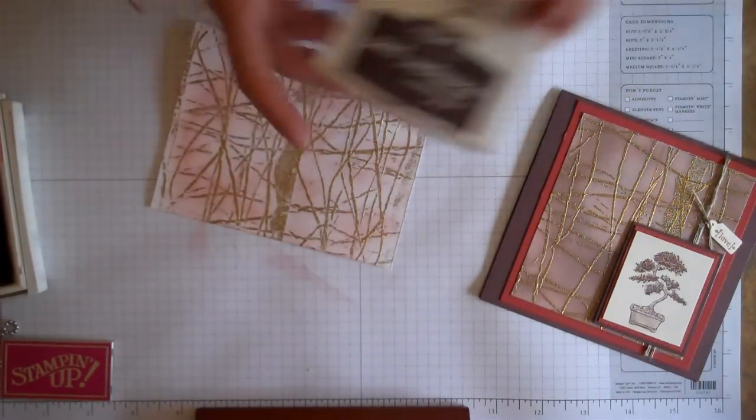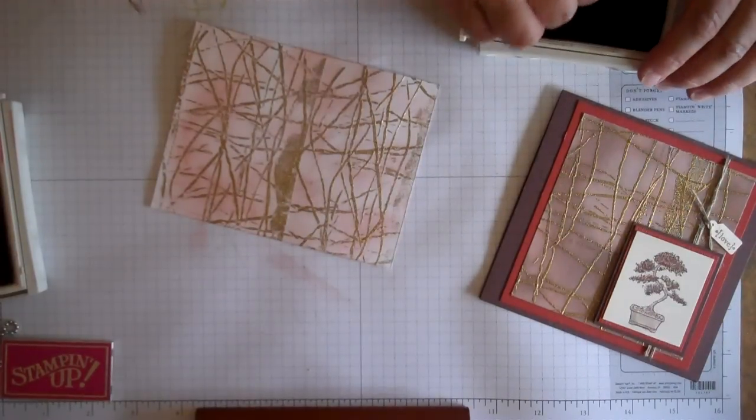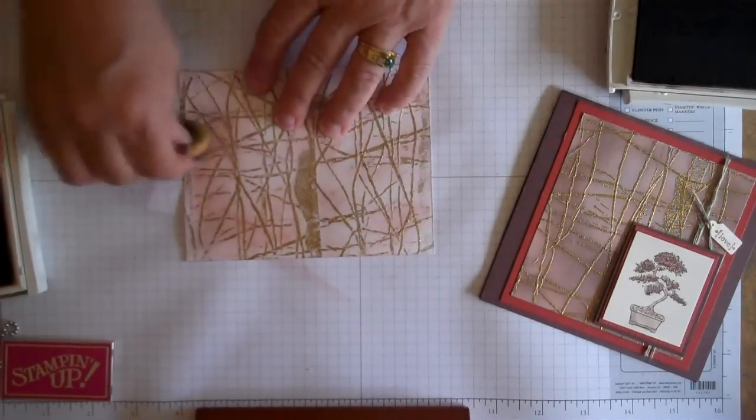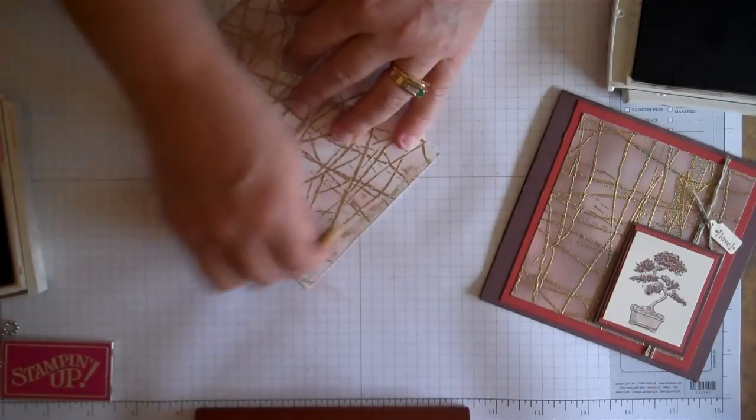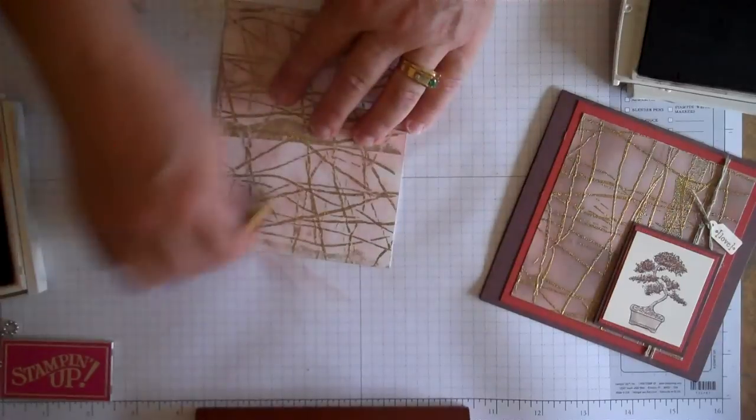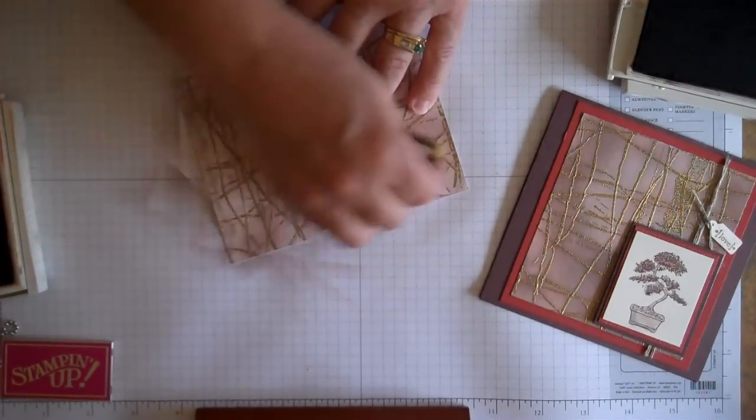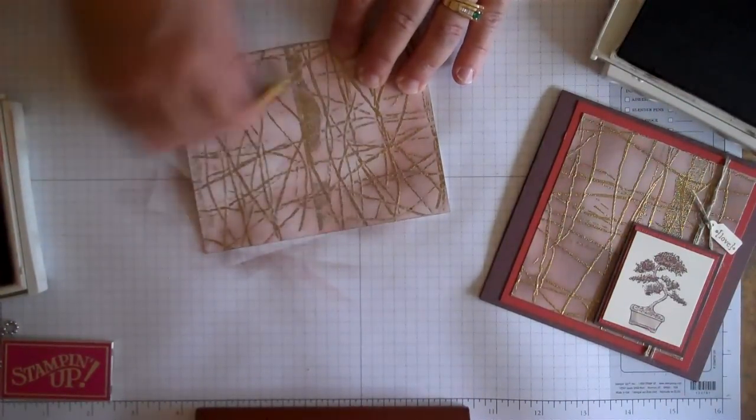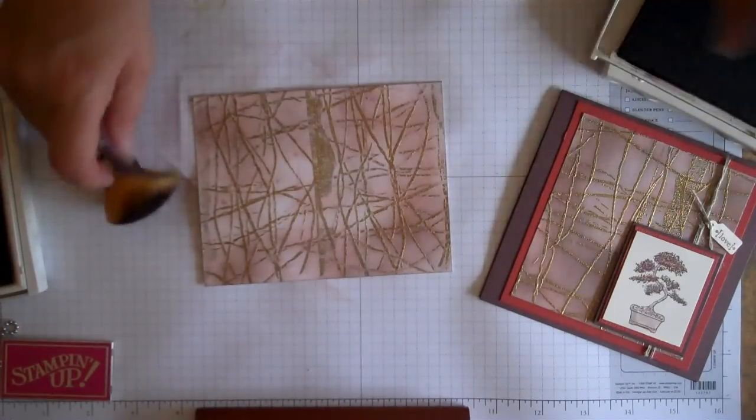You can sponge on this very easily. Then I took a little bit of chocolate chip, and I did the same thing with the sponge around the outside here, just to darken it up a little bit. As you can see, this beautiful embossing comes through, and it's just a really neat technique. It really fares well with any kind of an Asian-type theme as well, but I've seen it on other cards, and it's really beautiful.